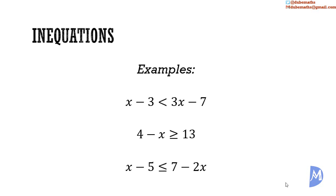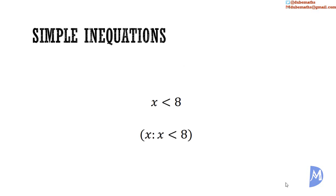Let me reinforce exactly what I mean. Given x is less than 8 — or x such that x is less than 8, written in set notation (more on this in a later video) — we know that x could be 7, it could be 6, it could be 2, it could be 0, it could be negative 5. But x cannot be 8, because 8 is equal to 8; 8 is not less than 8.